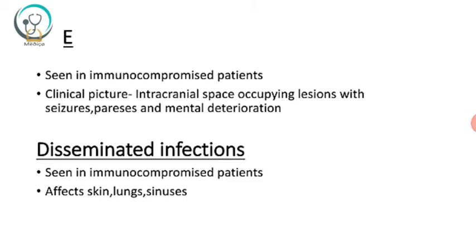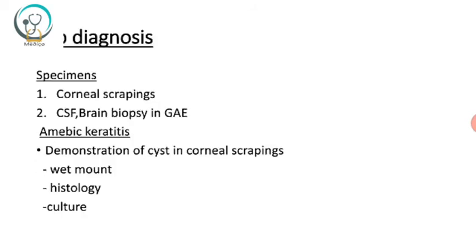GAE (granulomatous amoebic encephalitis) is commonly seen in immunocompromised patients, unlike keratitis which is seen in healthy individuals. The clinical picture is similar to intracranial space-occupying lesions, with seizures, paresis, and mental deterioration. Disseminated infections — also seen in immunocompromised patients — affect the skin, lungs, and sinuses.